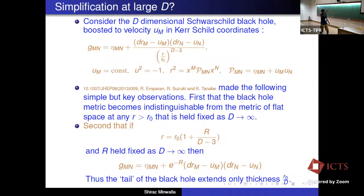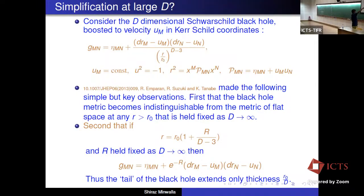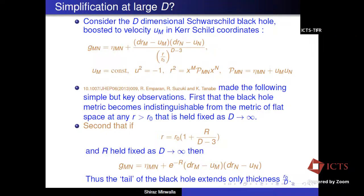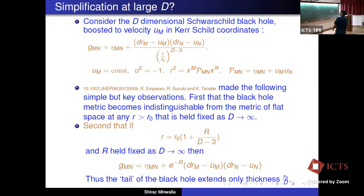We present the metric for this black hole in coordinates that may be unfamiliar — what are called Kerr-Schild coordinates, the coordinates that Kerr used in writing down the Kerr metric. Emparan, Suzuki, and Tanabe about ten years ago made the following simple but key observation: if you look at this metric, notice that it becomes indistinguishable from the metric of flat space for any r > r_0 in the limit that r/r_0 is held fixed and d is taken to infinity. This is simply because any number greater than one to the power infinity is infinity, and one over infinity is zero — so that term just vanishes.